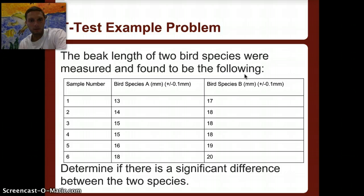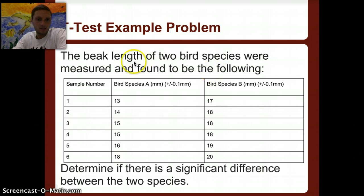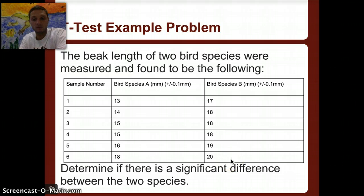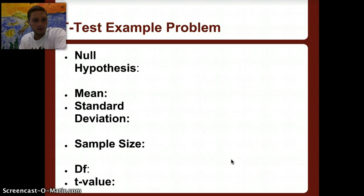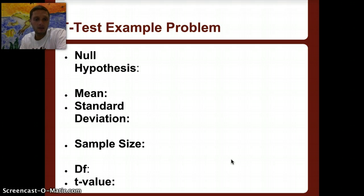Now for an example problem. The beak length of two bird species was measured, with six birds measured for each species A and B. We want to see if there is a significant difference between the two species in beak length. Pause the video and calculate the null hypothesis, mean, standard deviation, sample size, and degrees of freedom, then perform a t-test to determine if there is a significant difference.